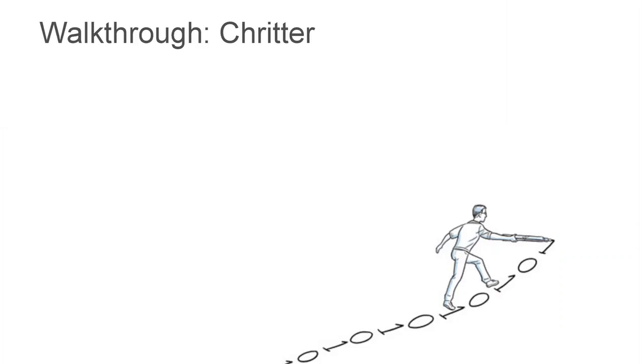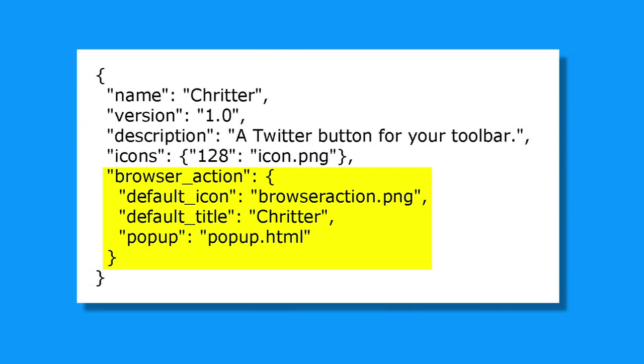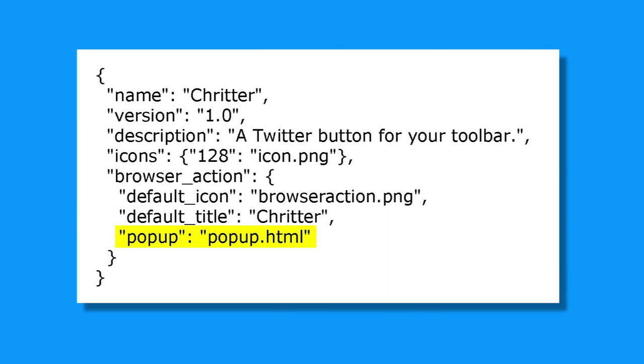Now, let's try this stuff out by iteratively developing an extension. Our extension will be a Google Chrome Twitter client, which we'll call Critter. First, we'll give the extension a basic hello world type UI. Of course, we need a manifest file. In it, we specify the extension's name, version number, description, and icon. For the UI part, we're going to pick a browser action because we want our tweets handy at all times. We populate the browser action fields with an icon that'll appear in the toolbar, a tooltip that'll appear when the user mouses over the icon, and a popup bubble that'll appear when the user clicks on the icon.